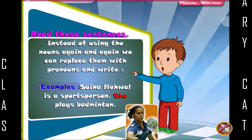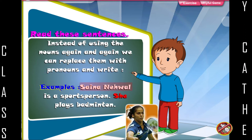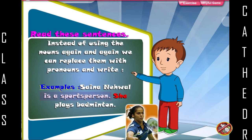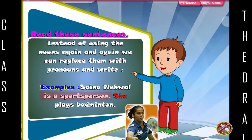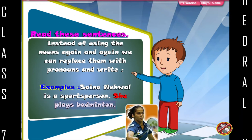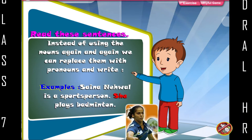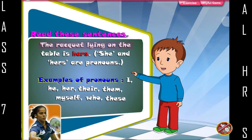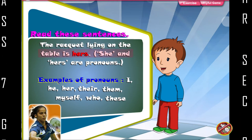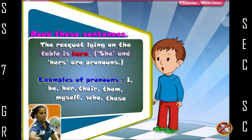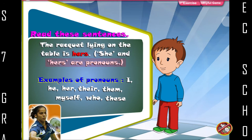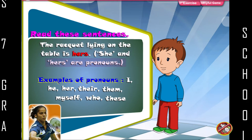Examples: Saina Nehawal is a sports person. She plays badminton. The racket lying on the table is hers. She and hers are pronouns.